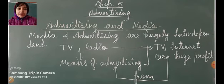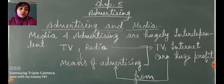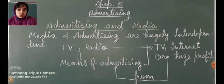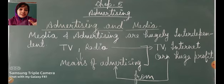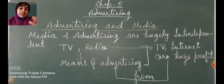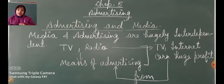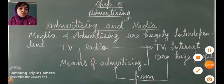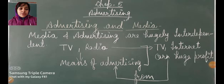The advertisement company gives money to mass communication channels for displaying their advertisements. The mass communication channels also share their earnings with the advertisement company. So advertising and media are closely linked through this financial relationship. Today we stop here and we will continue in our next video session.